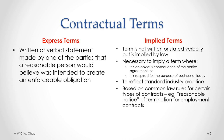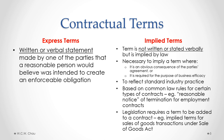Also, based on common law rules for certain types of contracts, terms will be implied. One obvious example is with an employment contract — there is a common law implied term that to terminate an employee, they need to be given reasonable notice. Terms can also be implied by government legislation that identifies specific contracts and requires specific terms to be automatically implied. One example is under the Sale of Goods Act, which requires terms regarding the quality or delivery of items to be automatically implied into sales contracts.